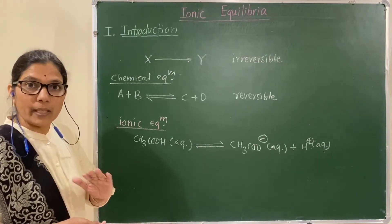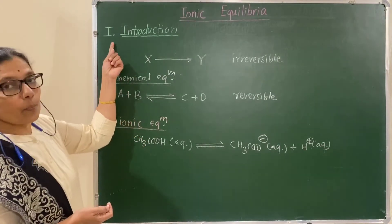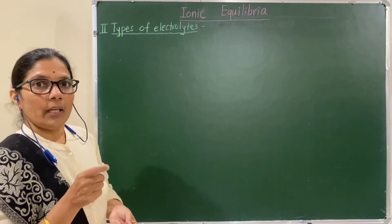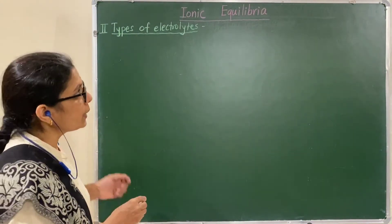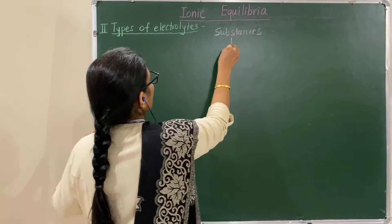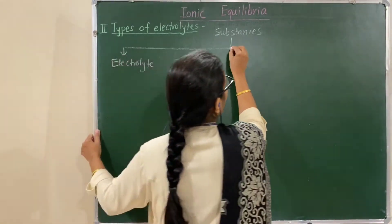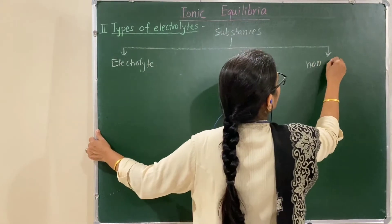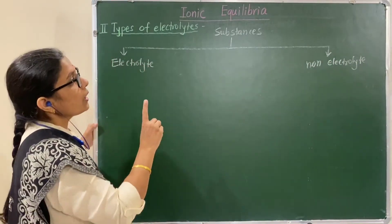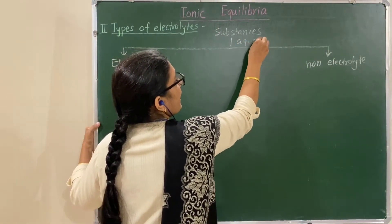This topic is very simple, easy to understand, and very interesting. Now let us consider the second point: types of electrolytes. Substances are classified into two types: electrolyte and non-electrolyte. We are considering substances when dissolved in water, that is, their aqueous solutions.